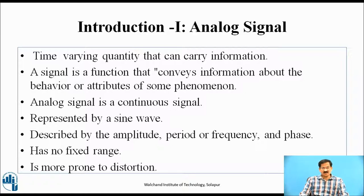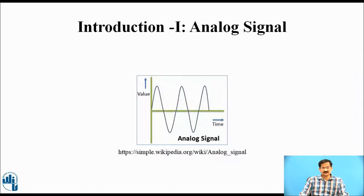An analog signal is more prone to distortion. This is the graphical representation of an analog signal. It is a sinusoidal quantity — it may be a voltage or a current. As mentioned, this is a continuous signal, and the meaning of a continuous signal can be explained with the help of this waveform.